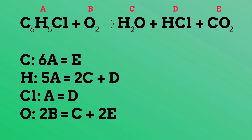For each atom, I am taking the number of atoms for that specific variable on the reactant side and equaling it to the number of atoms for any variable on the product side. For example, for oxygen I have the equation 2B = C + 2E, because for oxygen on the reactant side I assigned it variable B with two oxygen atoms, on the product side variable C has one oxygen atom, and variable E has two oxygen atoms.